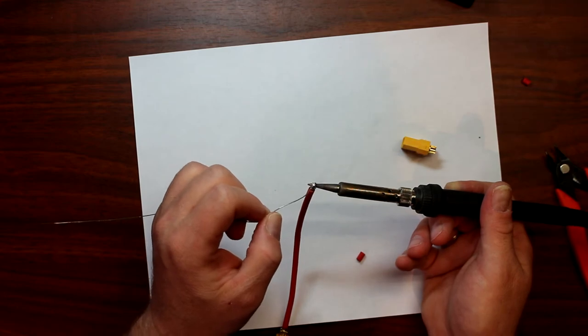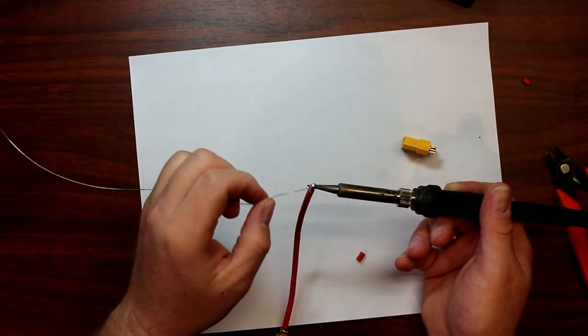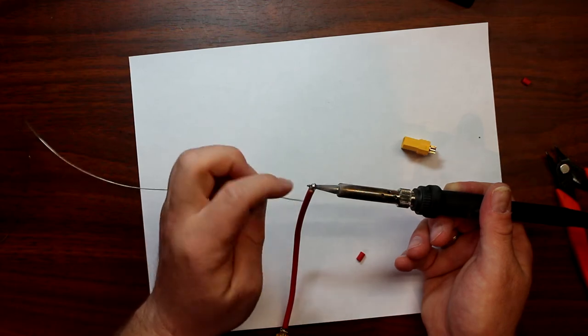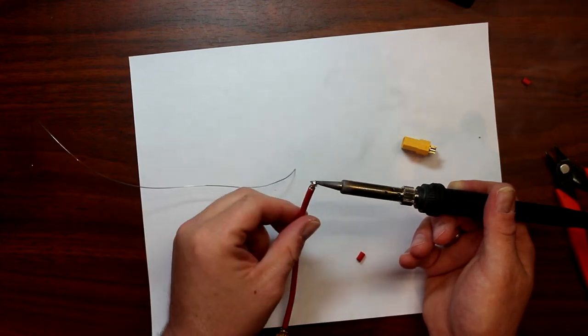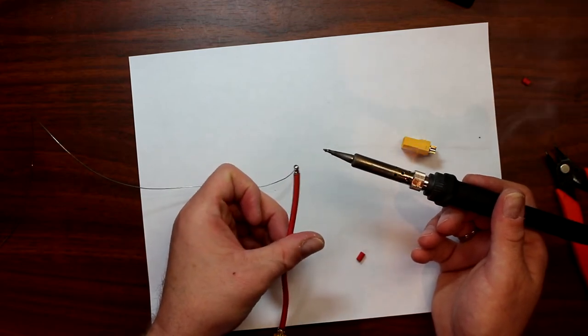Basically what you want is to make sure the complete wire is full of solder. You don't want any bare spots. I turn it around, that's perfect.